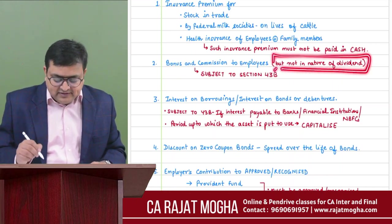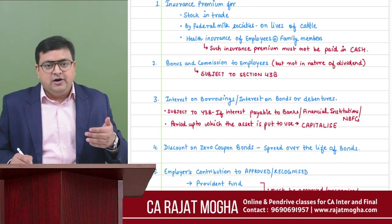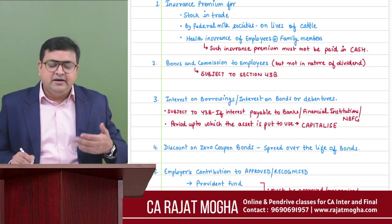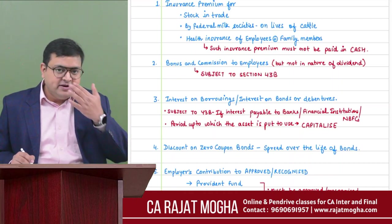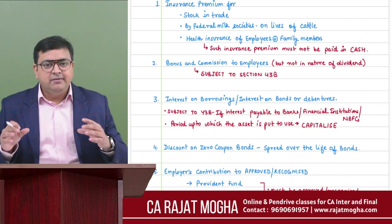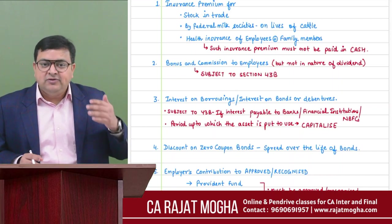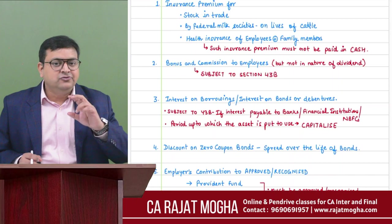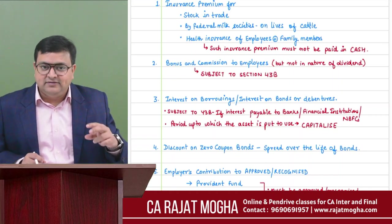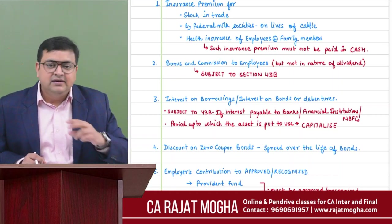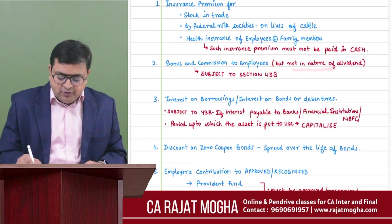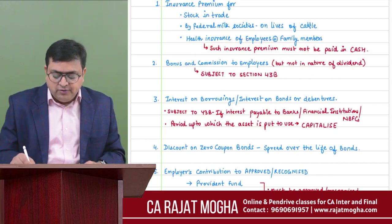Another important point: bonus and commission is allowed, but dividend paid is not — dividend is an appropriation of profits, not an expense. If any bonus is paid in lieu of dividend — i.e., it's named as bonus but is actually a dividend — it will not be allowed. The bonus should not be in the nature of dividend.